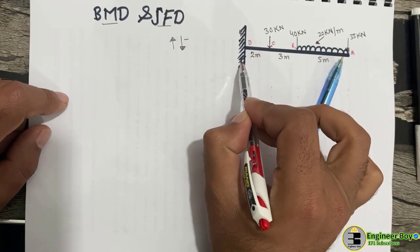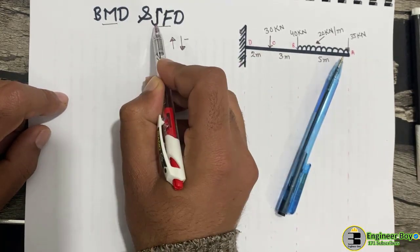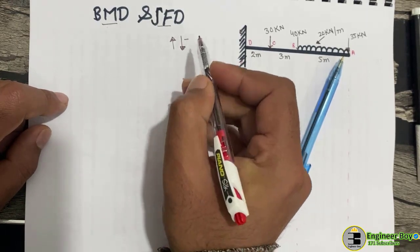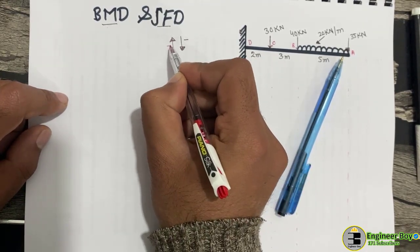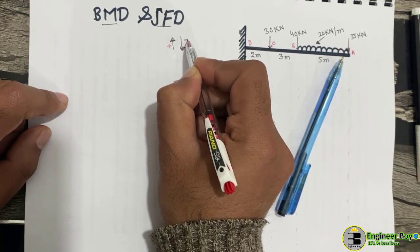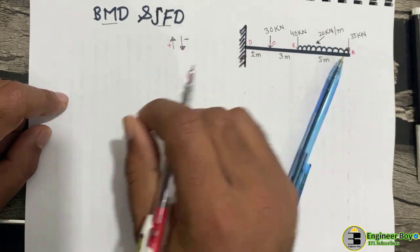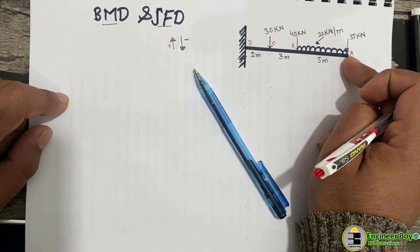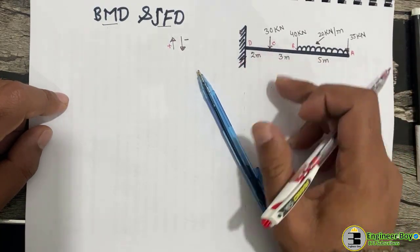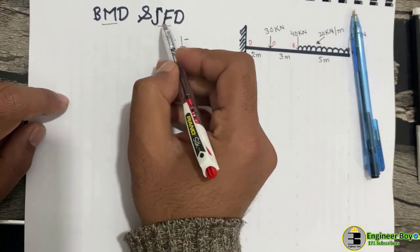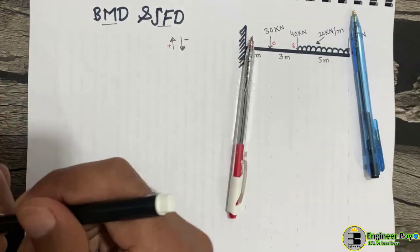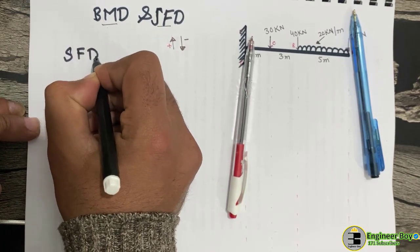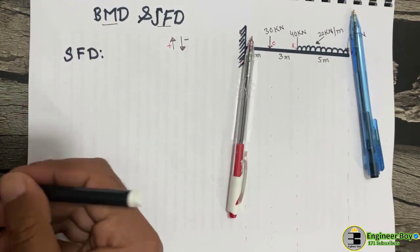We have another cantilever beam whose shear force and bending moment diagram will be drawn. The convention is: upward will be positive, downward will be negative. We have different sections at points A, B, C, and D. First, we are going to draw the shear force diagram.